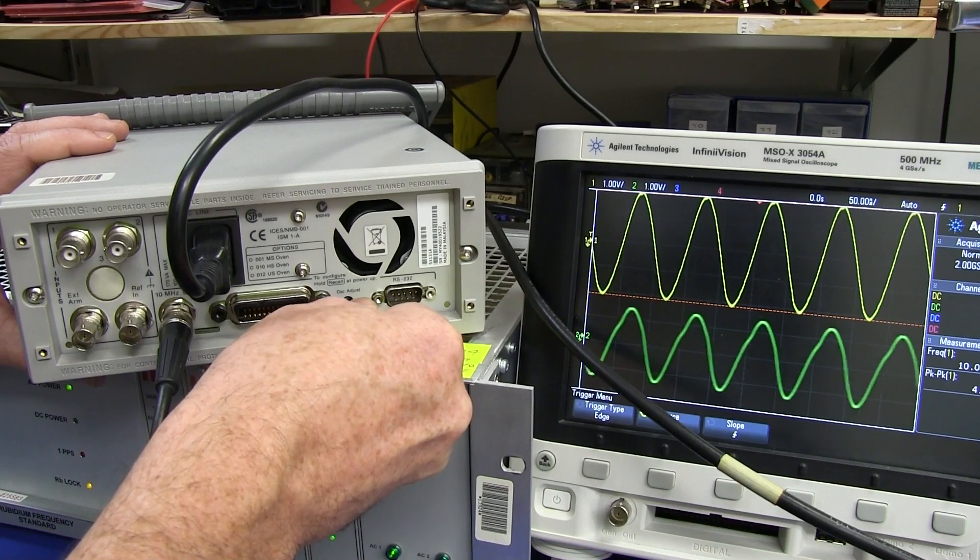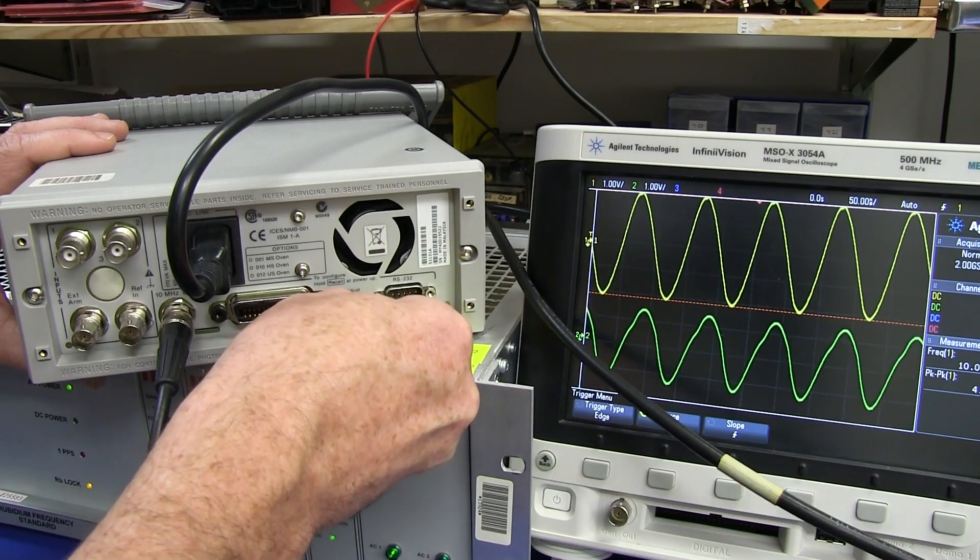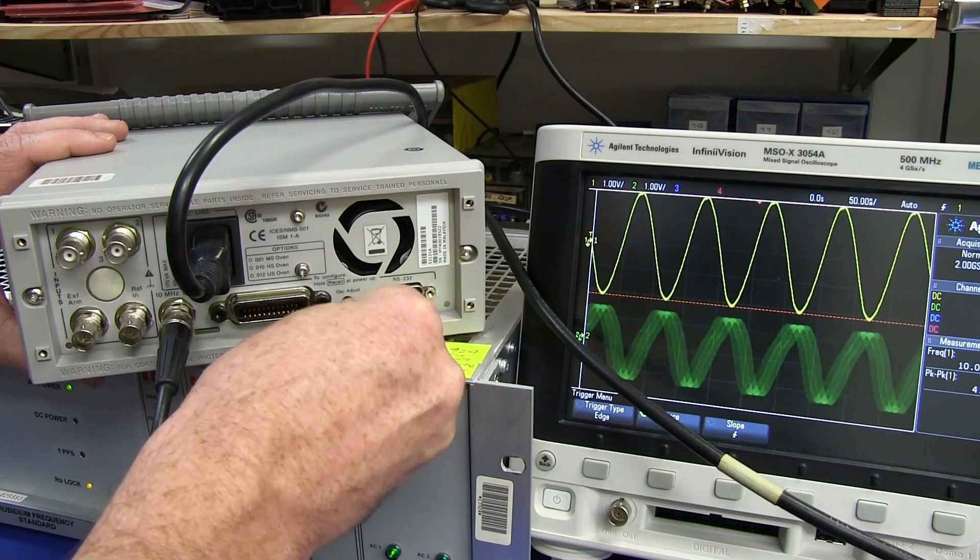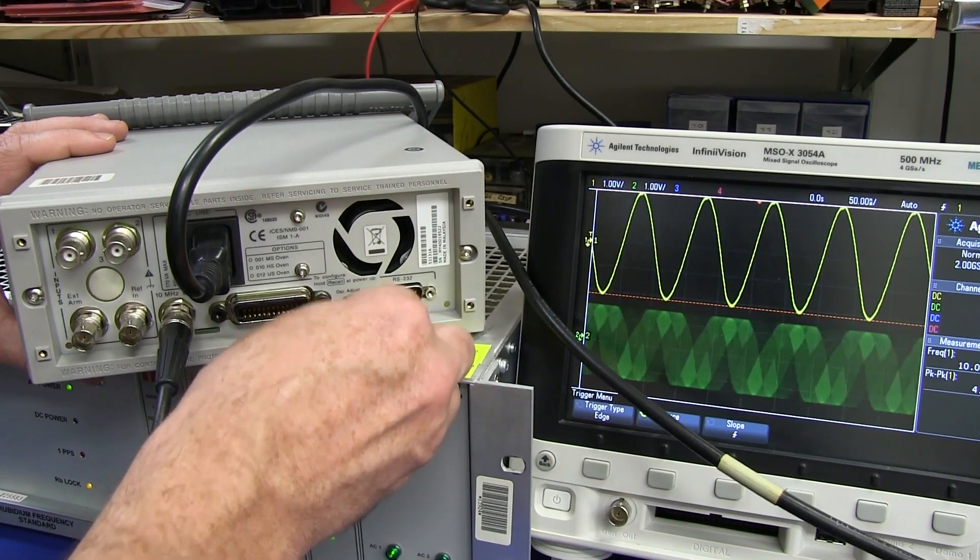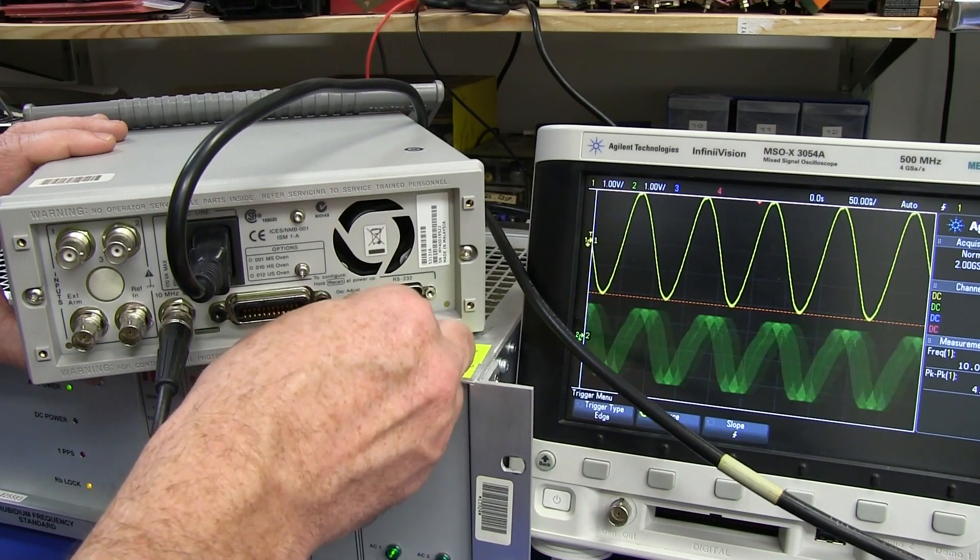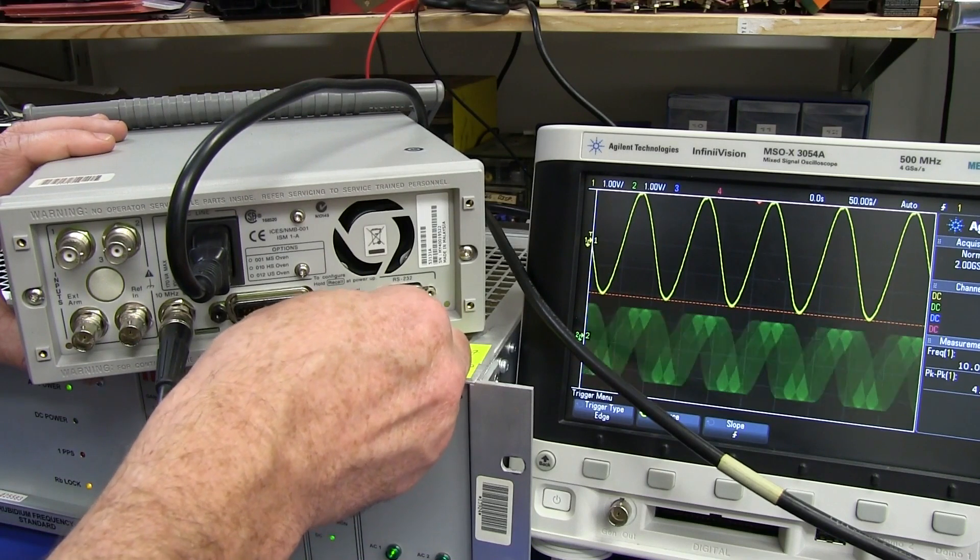and that's why on these ones with the stock oscillators, they put the calibration pot on the back. Because, ah, well, because the oscillators are so crap that really, you know, before any critical operation, you probably should adjust it against the standard. Really.